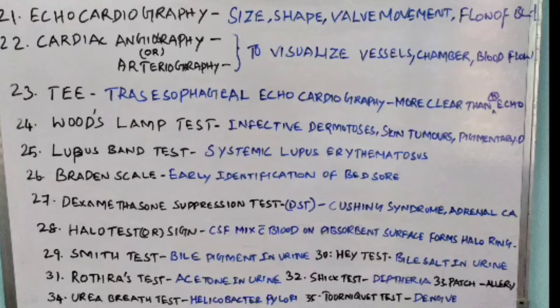Twenty-fourth point: Wood lamp test, otherwise called Wood slide test. It is done to find out infective dermatosis, skin tumors, and pigmented dermatosis, which may be hypopigmentation or hyperpigmentation.